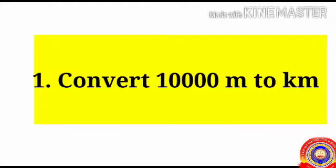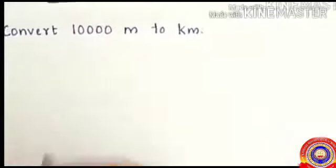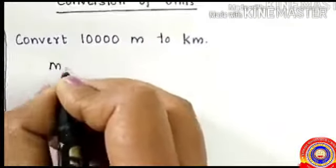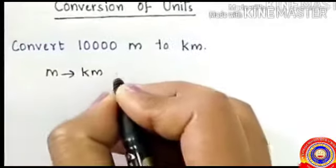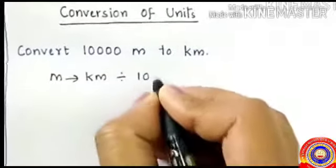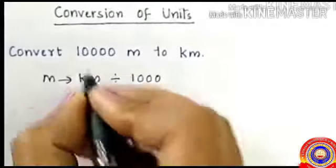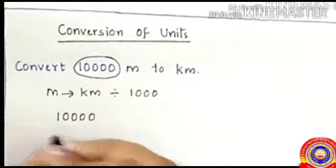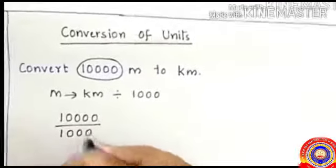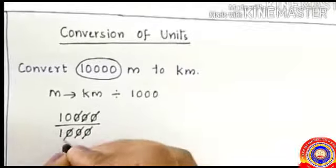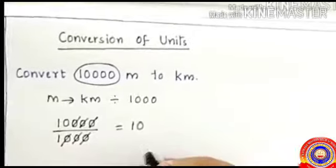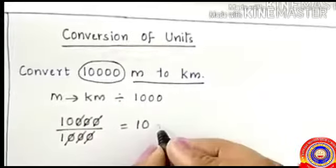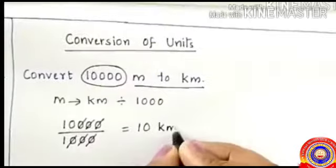Let's look at some more examples. First question: convert ten thousand meters to kilometers. We know to convert meter to kilometer, divide by one thousand. So ten thousand divided by one thousand equals ten, and the answer is ten kilometers.